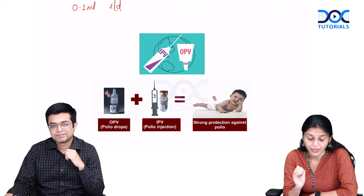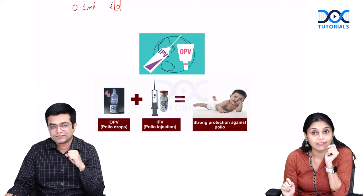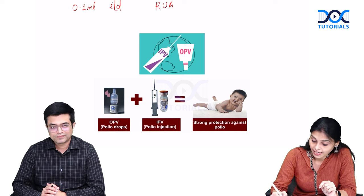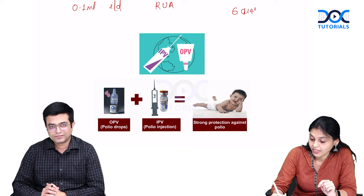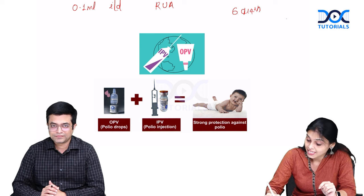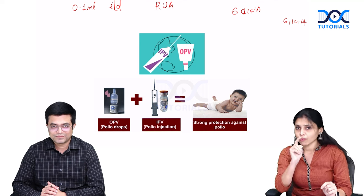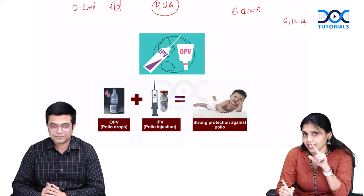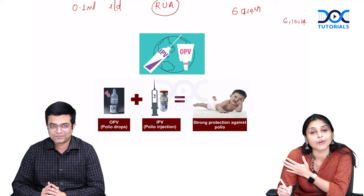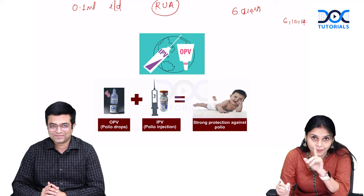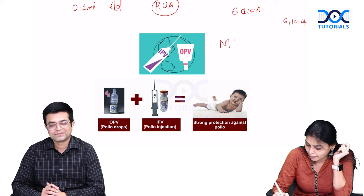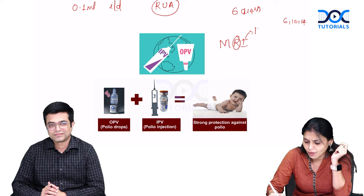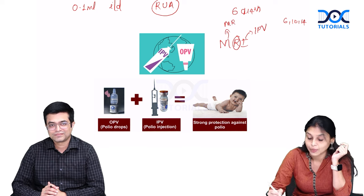These are very important MCQ points. IPV is given on the right upper arm. The schedule is 6th and 14th week, along with OPV which is given on 6th, 10th, and 14th week. Another important MCQ: which other vaccine under the National Immunization Schedule is also given on the right upper arm? Remember the mnemonic MRI - R is right upper arm, I is IPV, and M is MR vaccine.